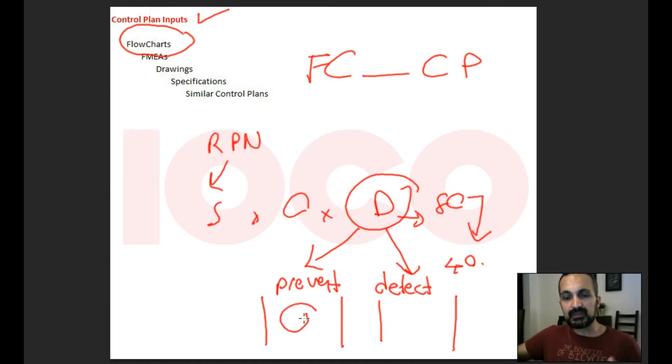You cannot just define a control point before evaluating the risk on FMEA. Before you prepare the control plan, you need the FMEA as the major input among these inputs. Drawings, of course - you control the temperature, dimensions, or hole dimensions, and you need data.